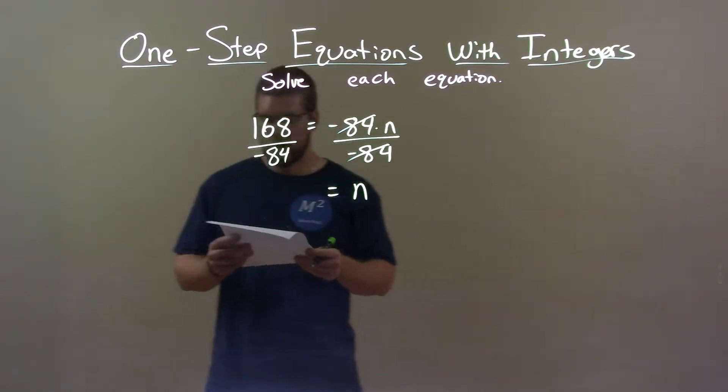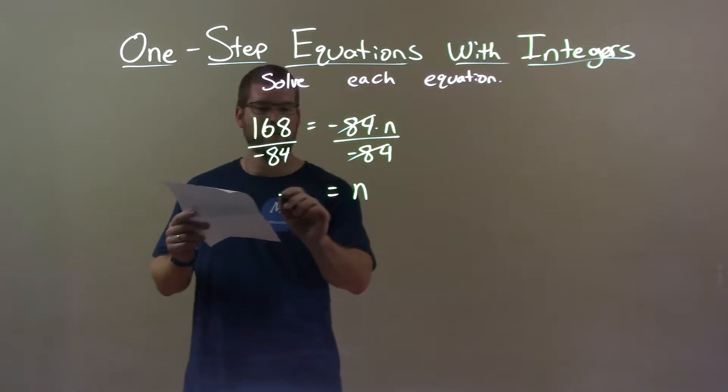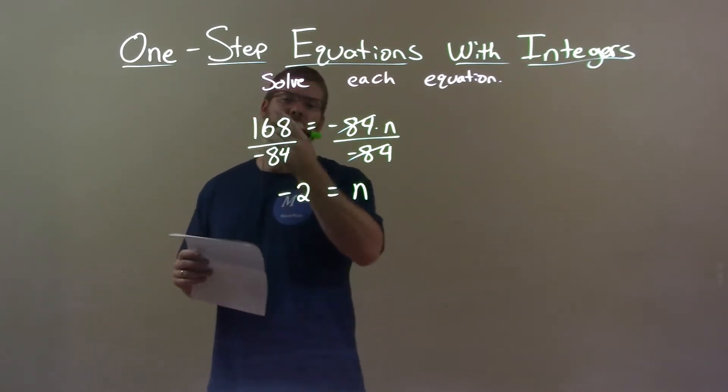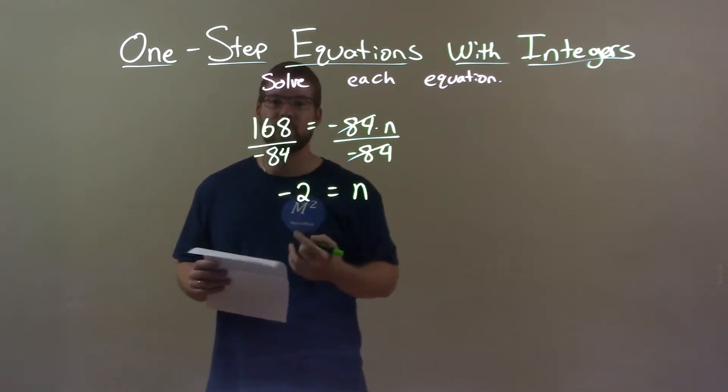On the left, 168 divided by negative 84 is a negative 2, alright? Positive divided by a negative is a negative. 168 divided by 84 is 2, alright?